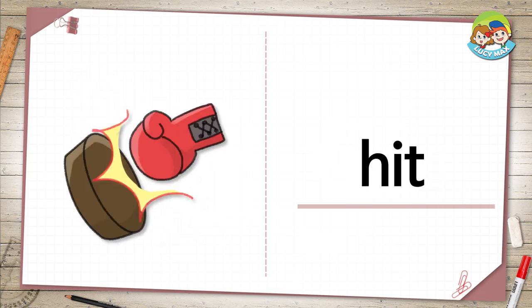The last word is hit. In the picture, someone wears a glove and hits the brown pad. What does a baseball player hit?